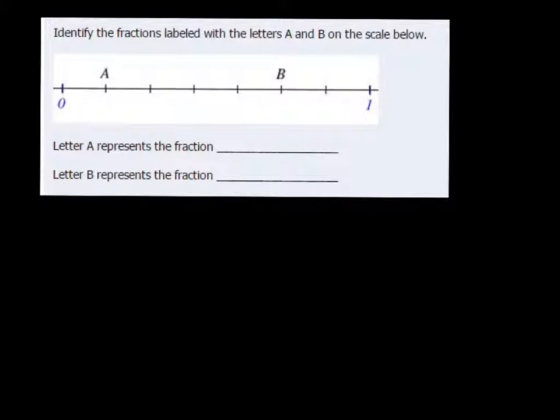So between 0 and A, that's 1 space, and 2, 3, 4, 5, 6, 7. So there are 7 spaces between the 0 and the 1. What this means is each space is worth 1/7.